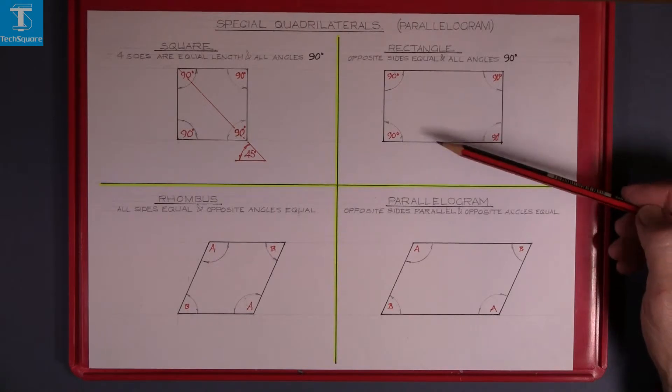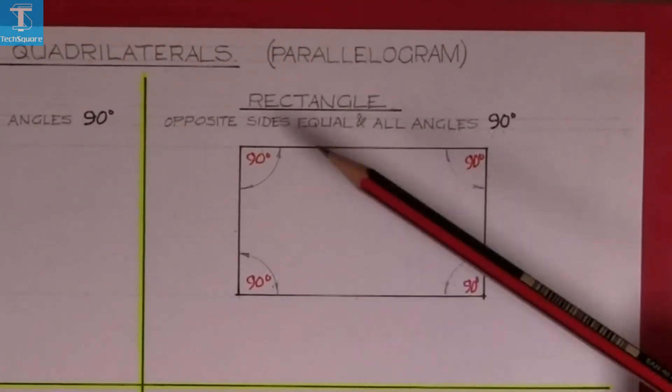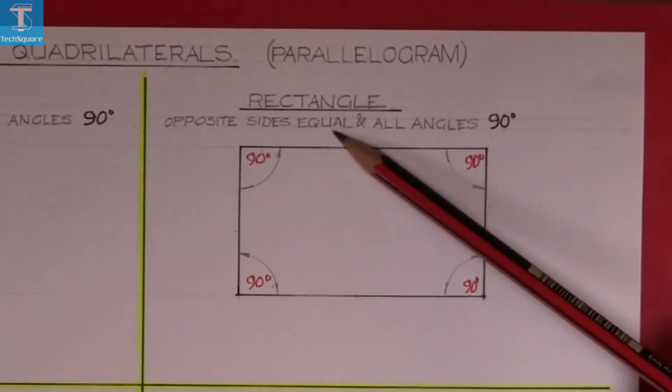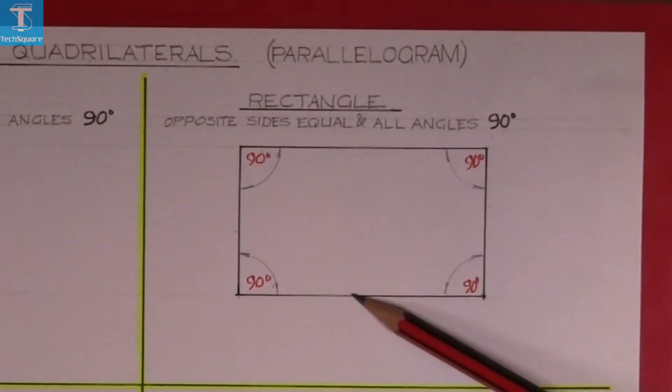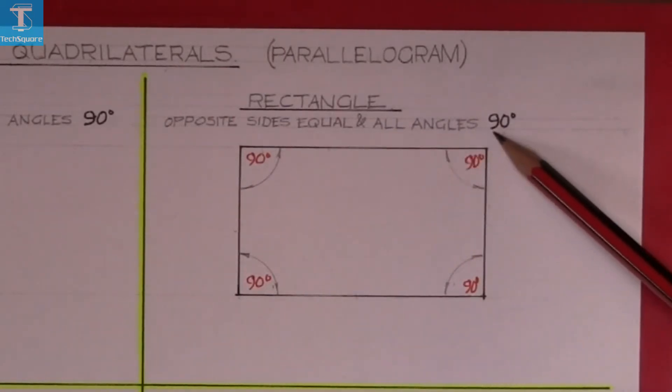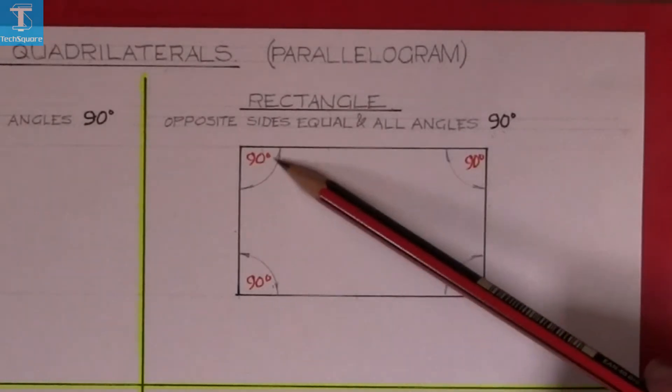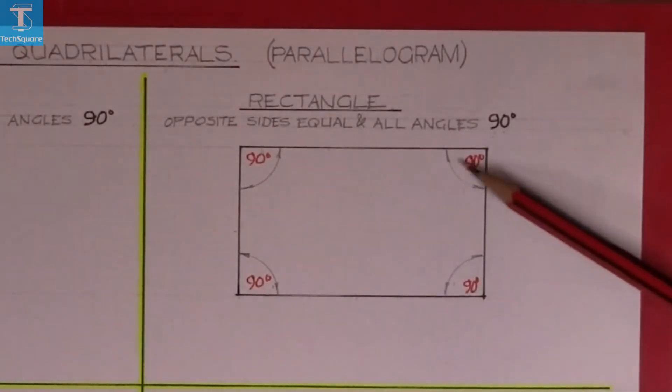Next one we're on to is a rectangle. So a rectangle opposite sides equal and all angles are 90 degrees. 90 degrees. So 90 degrees, 90 degrees and 90 degrees. And that's a rectangle. It can be any length.